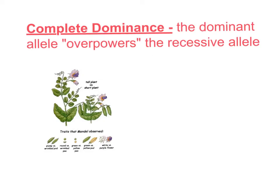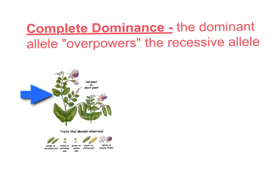Our first pattern of inheritance is the one discovered by Gregor Mendel: complete dominance. In this case, the dominant allele overpowers the recessive allele. This is what we've been studying all along. You can see in this picture the tall plant is the dominant and the short plant is the recessive. We make very simple Punnett squares with this type of inheritance. Capital T represents the dominant genotype, while lowercase t represents the recessive genotype.